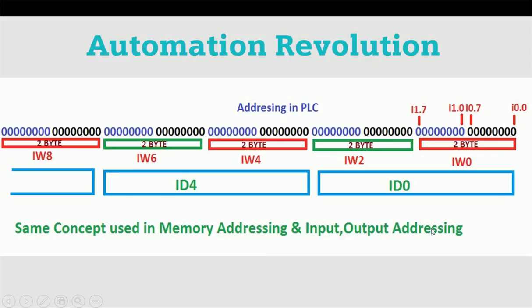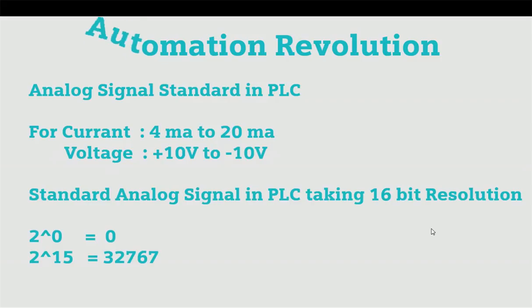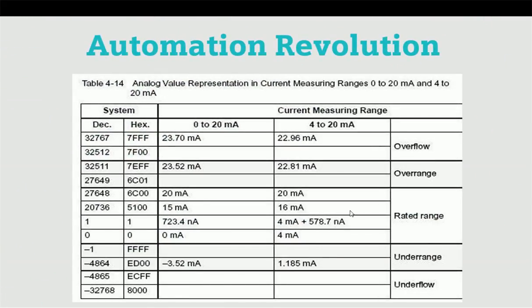Analog signal has two types of standard: current and voltage form. In current form, analog signal is taking 16-bit resolution. If we convert this binary into decimal, the total range would be 32,767. Here we can see one graph showing the standard rated range. If we go above 20 milliampere or 22 milliampere, this value will come in overflow or over-range. PLC will not consider this over-range or overflow range limit. That is why we will see only 4 milliampere to 20 milliampere as the rated range, so we will consider 0 to 27,648 value.